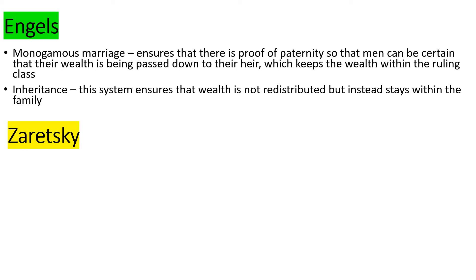Someone tweeted that inheritance tax should be 90%, so that when somebody inherits wealth from a dead relative it should be taxed heavily and spread out amongst people that need it. We just sort of see it as really normal that we inherit money from our families, but it could actually be redistributed and put back into public services and benefits instead. Because we have the inheritance system, rich families stay rich and poor families stay poor, keeping capitalism going.